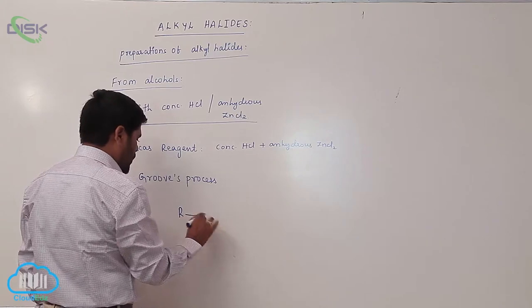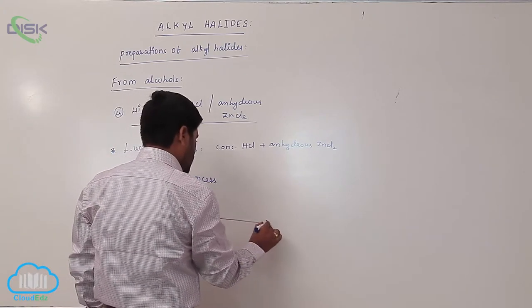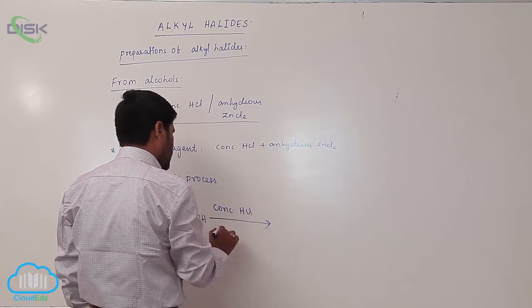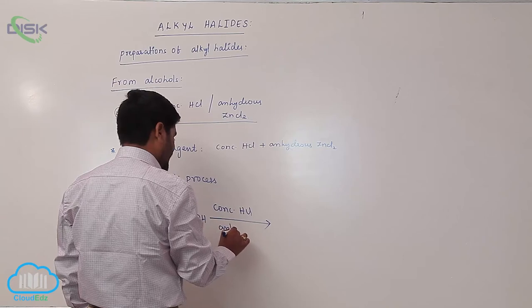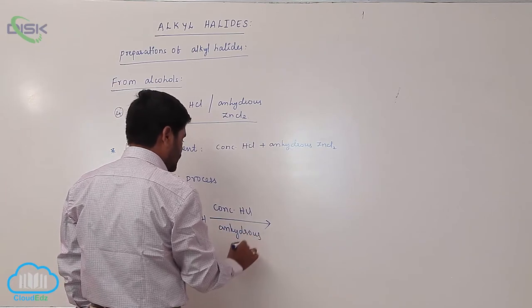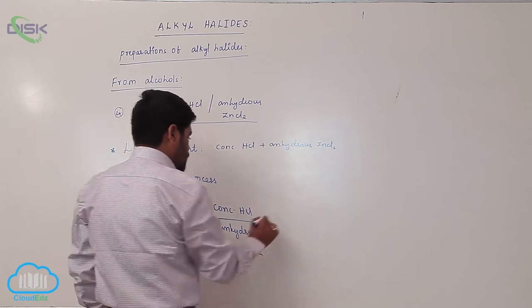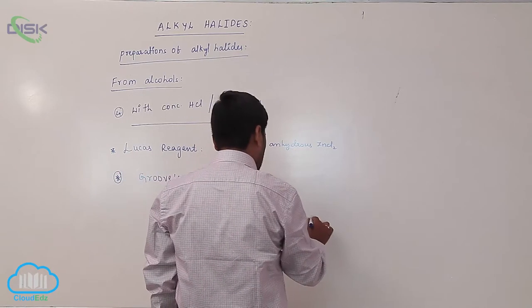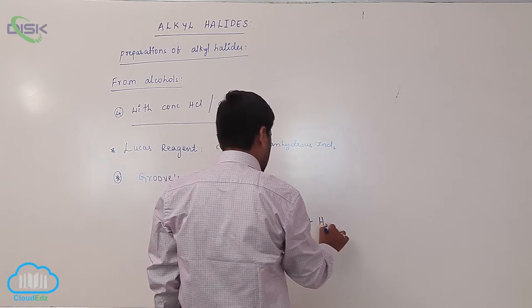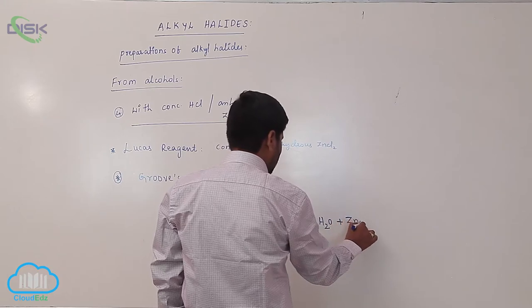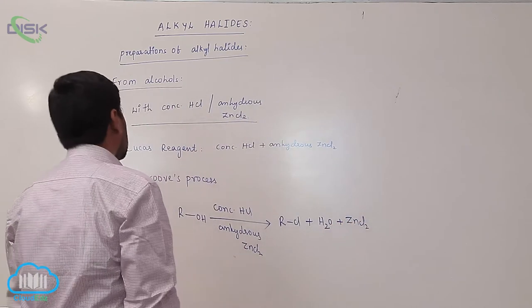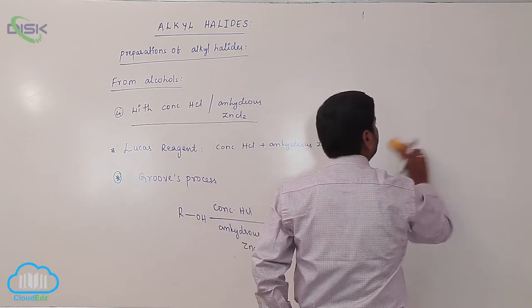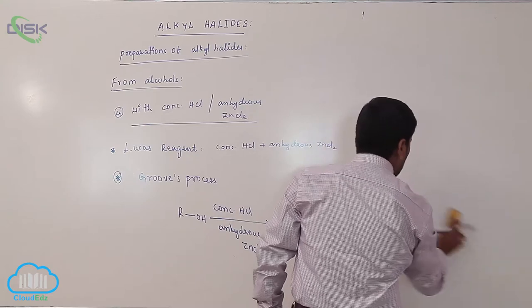An alcohol reacts with concentrated hydrochloric acid and anhydrous ZnCl₂ to form alkyl chloride plus H₂O. Here, ZnCl₂ acts as a catalyst. This particular process is known as the Lucas process.